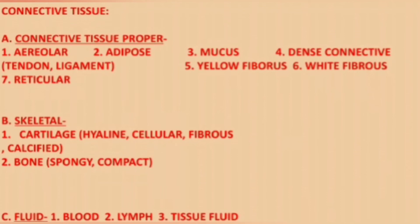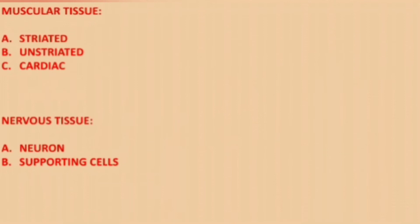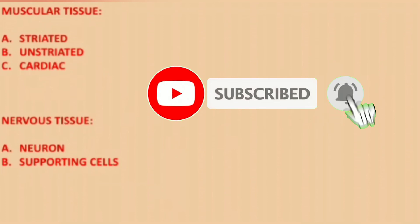Connective tissue proper includes areolar, adipose, mucus, dense connective, yellow fibrous, white fibrous, and reticular. Skeletal connective tissue consists of cartilage and bone. Fluid connective tissue includes blood, lymph, and tissue fluid. Muscular tissue is striated, unstriated, and cardiac. Nervous tissue consists of neurons and supporting cells.